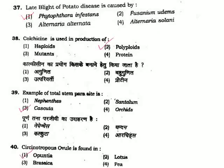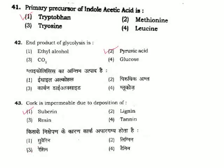Question 38: Colchicine is used for production of — colchicine is used for chromosome doubling and polyploidy. Correct answer is Option 2. Question 39: Example of total stem parasitism. Question 40: Circinotrophous ovule is found in — correct answer is Option 1.